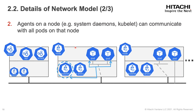The second one is about agent-to-pod communication on a node. It defines that agents on one node can communicate with all pods on that node. It only defines the behavior inside each node. If we focus on the kubelet, the agent like kubelet can communicate with all the pods in the same node.